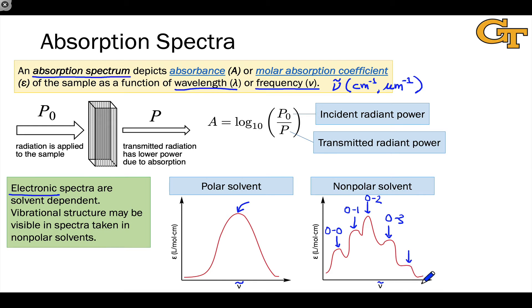You'll also see wavenumber plotted increasing to the left, because that's consistent with wavelength increasing to the right, which historically has been how absorption spectra were plotted. So wavelength, energy, energy backwards — these all appear on absorption spectra, and you want to be very careful to correctly interpret the x-axis in any given absorption spectrum.